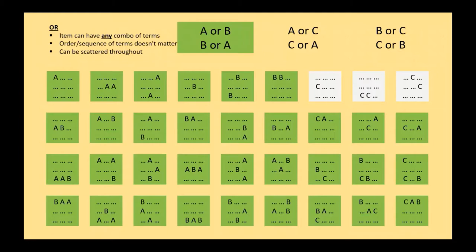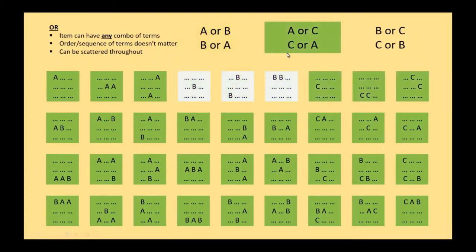The search terms and expressions we're looking for can be scattered anywhere throughout the document. So for example, in these results that we see here, we see that some have just one A, some have multiple instances of A in the document, or we can have items that have B as well as A spread throughout. So a lot of them match. Same thing with A or C, or C or A — we see a lot of them match.